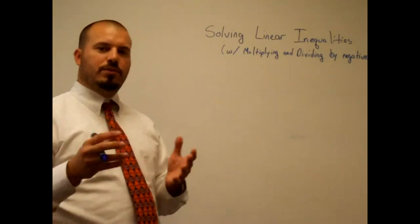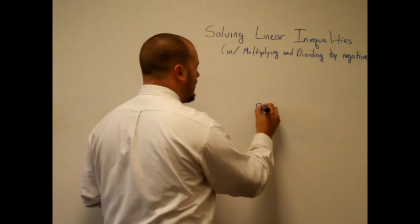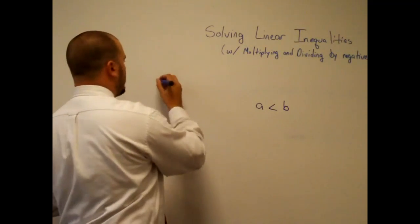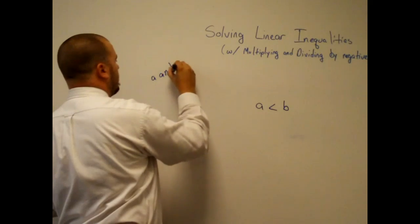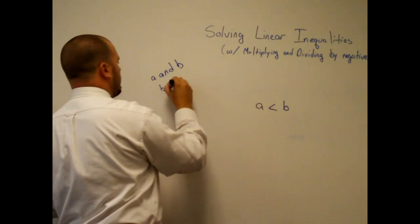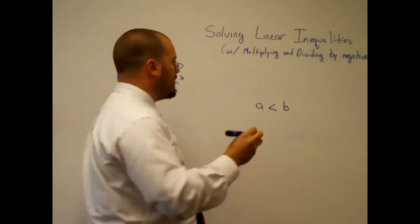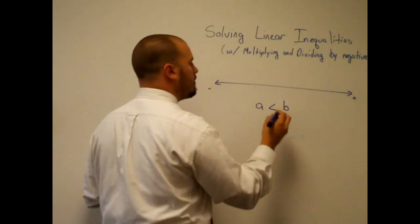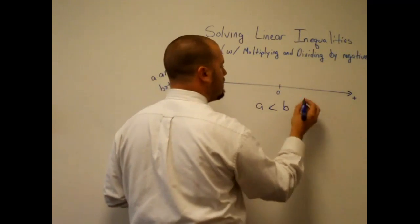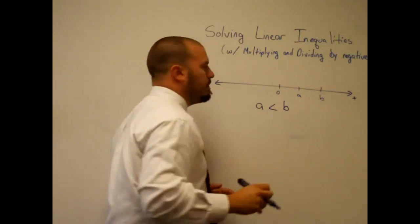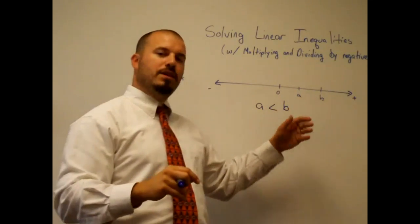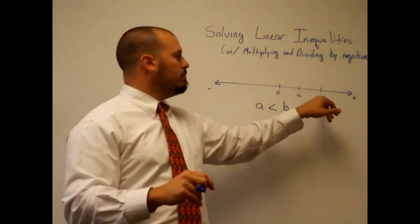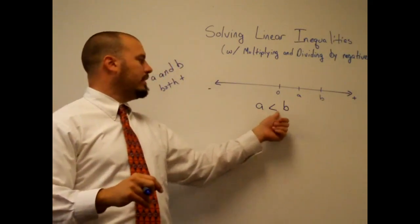Let's look at just a general inequality of A is less than B, and consider that A and B are both positive numbers. If I were to graph them on a number line — negatives to the left, positives to the right — A is less than B because it is further to the left on the number line, closer to the negatives. B is further to the right, so it's larger.